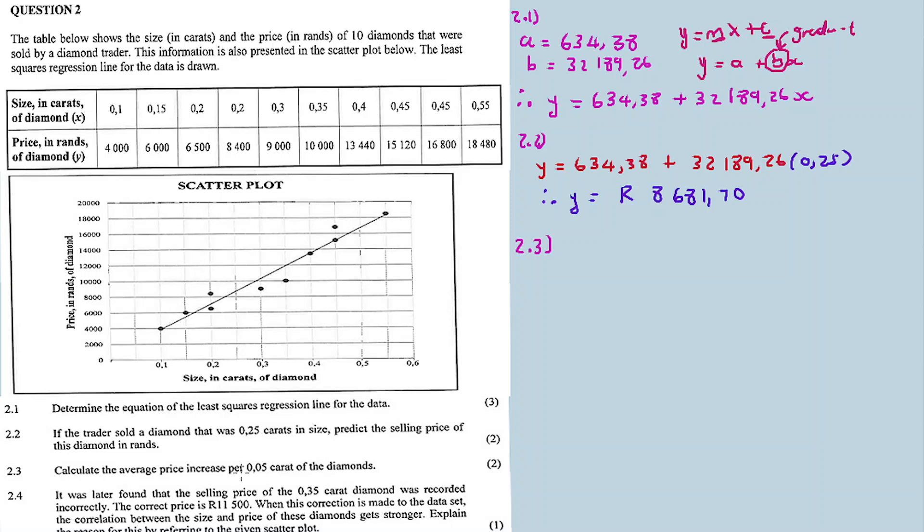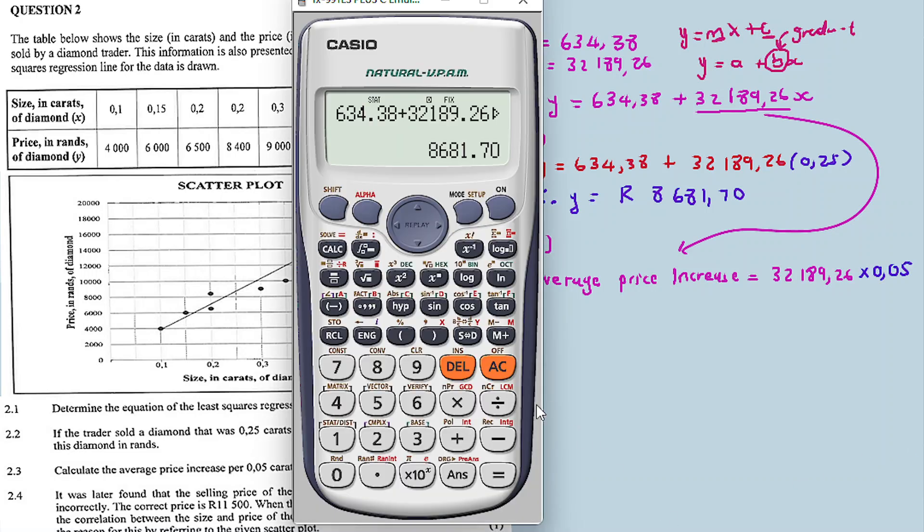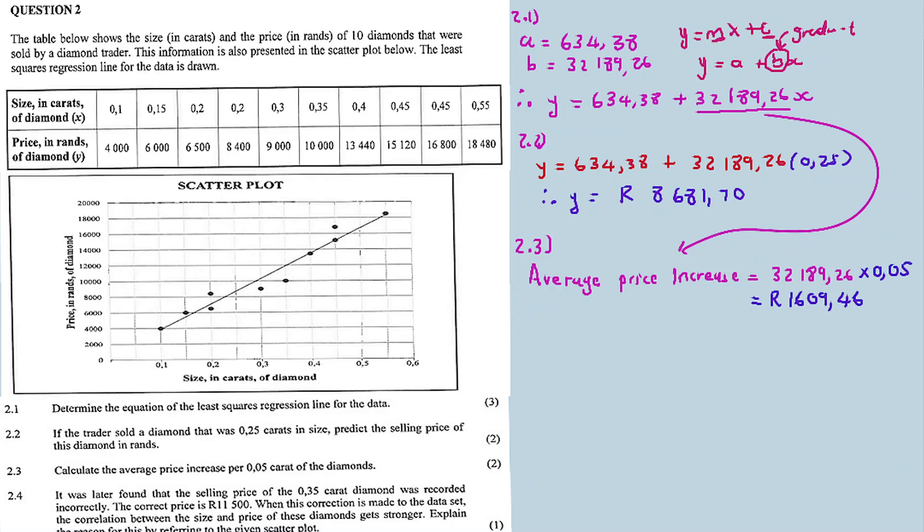By the 0.05, let us see: 32189.26 times 0.05 equal to 1609.46.